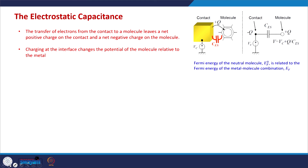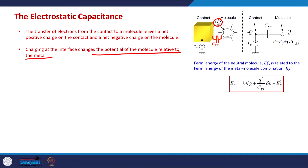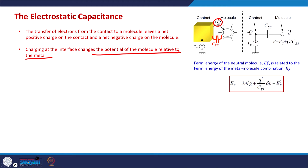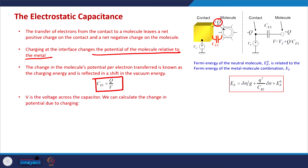Now let us consider the electrostatic component as well. When there is a transfer of electrons from the contact to the molecule, the contact will have a net positive charge and the molecule a net negative charge. In the reverse situation, when electrons transfer from molecule to contact, the molecule will have positive charge and the contact will have negative charge. This charging at the interface changes the potential of the molecule relative to the metal — it shifts the entire energy level of the molecule up or down.